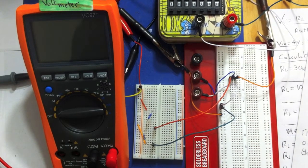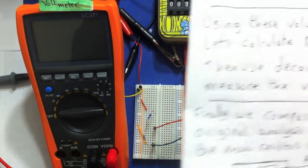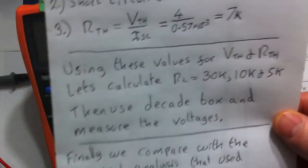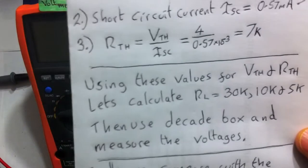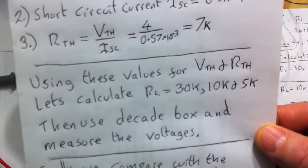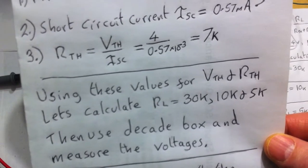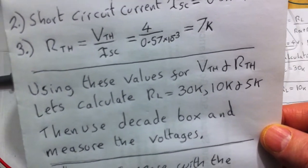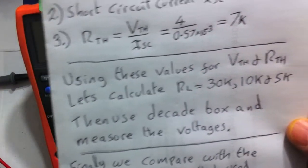So now we've got those values. What I'm going to do is the same experiment now. We're going to use three values for the load resistance. I'm going to use a decade box, and they are going to be 30k, 10k, and 5k, just as in the tutorial.